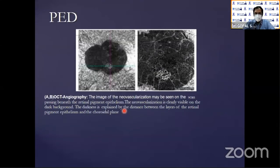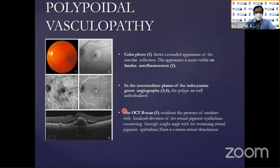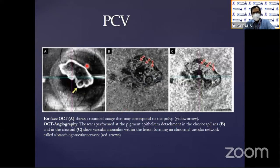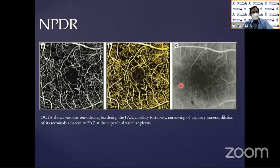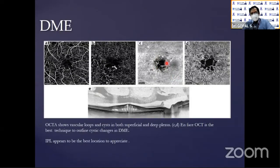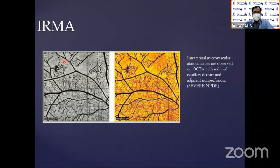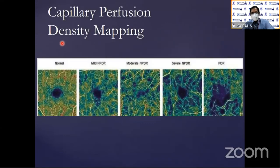A pigment epithelial detachment can look like a flow void, but always correlate with the structural OCT. OCT angiography findings must be validated through the corresponding OCT. In polypoidal choroidal vasculopathy, you can see the polyps — multiple polyps, sometimes on either side. In non-proliferative diabetic retinopathy, you can see microaneurisms — also visible in OCT angiography. In diabetic macular edema, you can see the cystoid nature of the cysts, the location of leakages and microaneurisms. IRMA can also be seen with ischemia and new proliferation. The capillary perfusion map shows the normal central area versus breakage of the capillary plexus as the retina progresses from moderate NPDR to PDR.